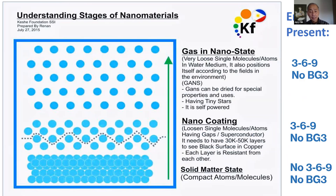This slide is a good one to explain matter, nano, and GANs. Let's pretend that the blue solid balls at the bottom of the slide — the ones that are all compacted together — which you call solid matter, let's call it copper. Let's call it a copper tube. If you heat up the copper tube with a flame, put a propane torch on it, the surface will become black. Did copper burn? No, copper doesn't burn. What really happens is that you've loosened the surface atoms of the copper.